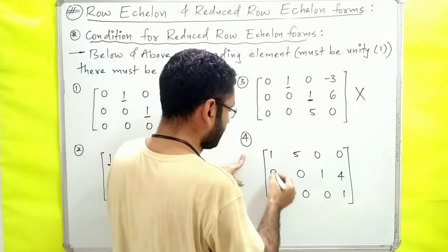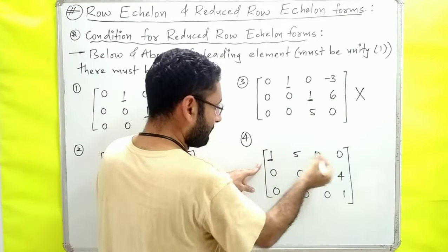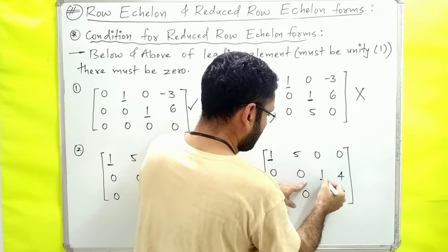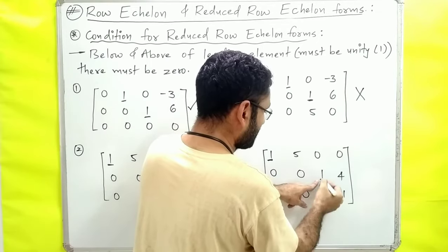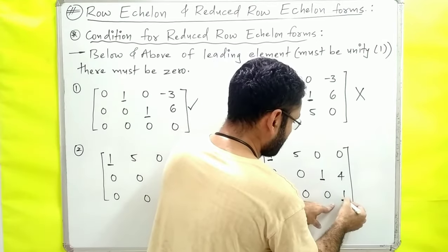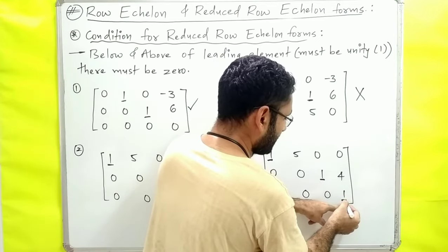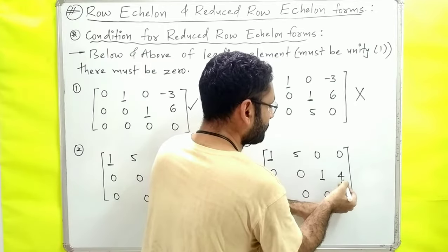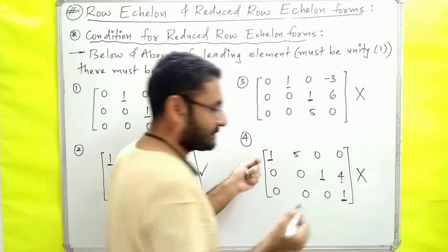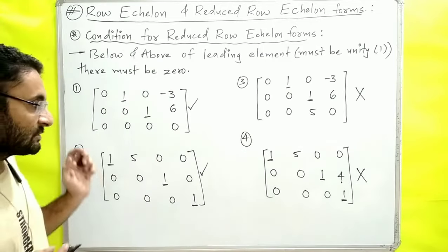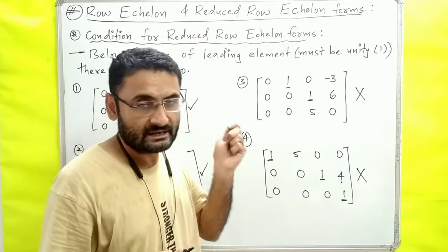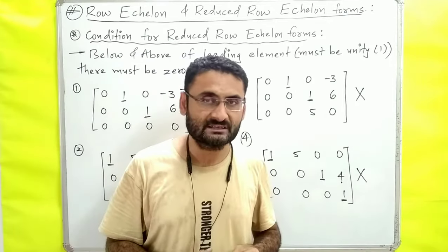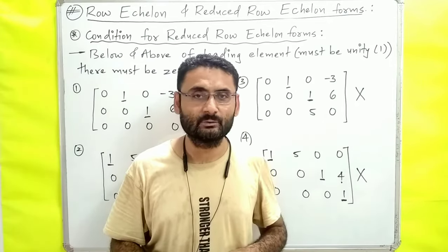It is not reduced row echelon form. Let's check another. The leading element is 1. Above it is 0, below it is 0. The next row's leading element is checked — all surrounding entries are 0. The last row is also 0. So this matrix is reduced row echelon form. I hope the concept of row echelon form and reduced row echelon form is clear from this video. Thank you very much.